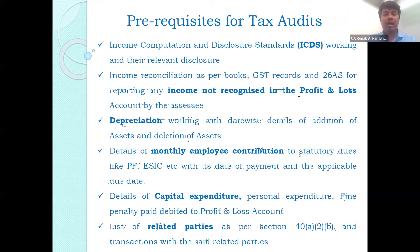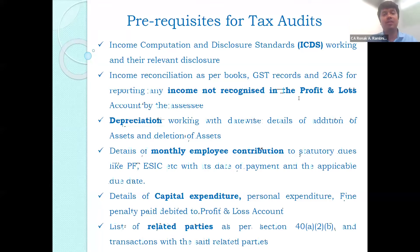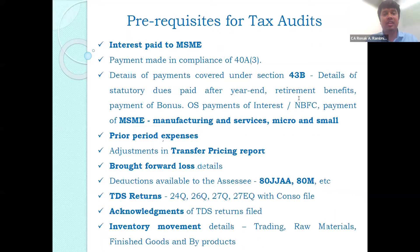Further is the details of capital expenditure and personal expenditure or fines paid by the assessee which are debited to the profit and loss account. Then comes the list of related parties — one has to refer to Section 40A(2)(b), list down the related parties, and check whether there are any transactions with such related parties.